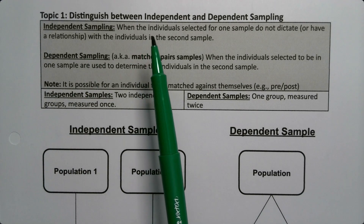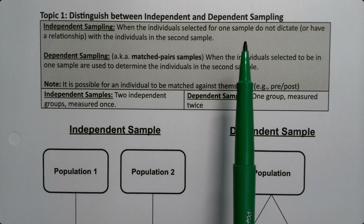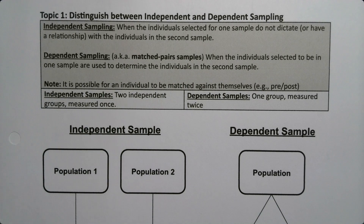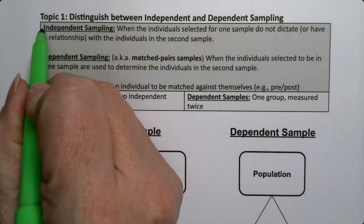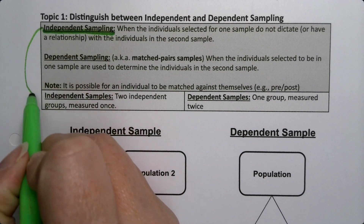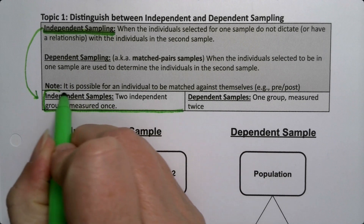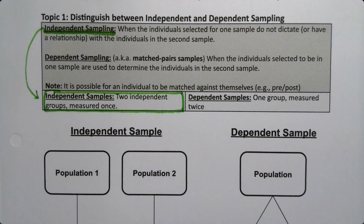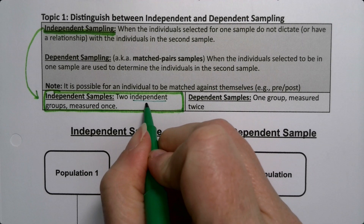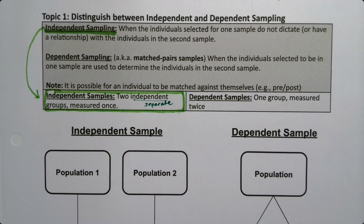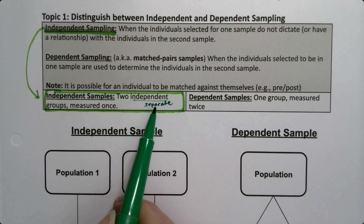Independent sampling is when the individuals selected for one sample do not dictate the individuals for the second sample. They are two independent, separate groups. That's what I mean by independent — two separate groups that are measured one time. If you measure two separate groups once, that's independent sampling. And the groups should be separate and unrelated.